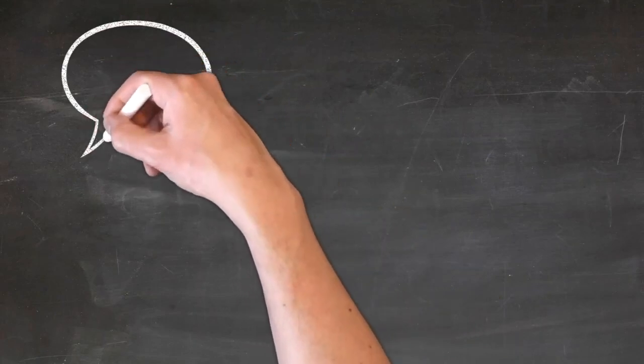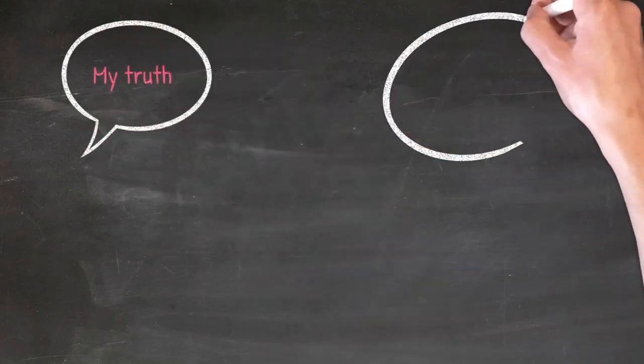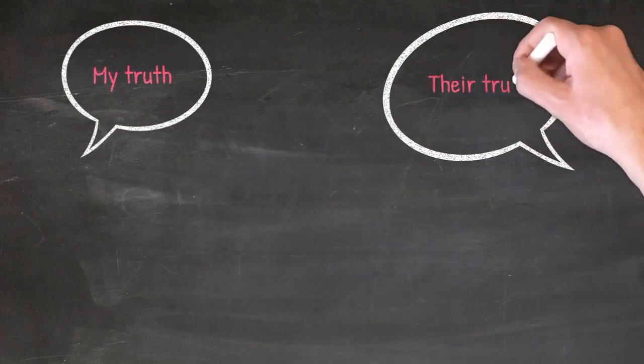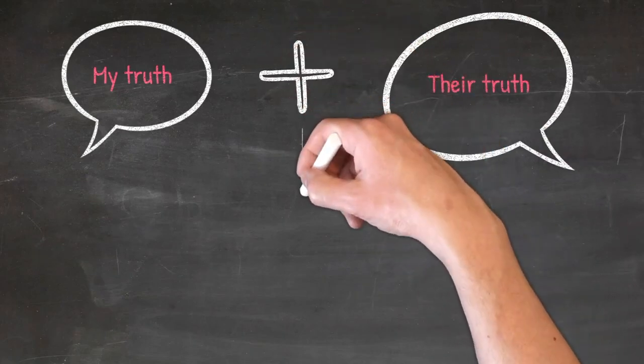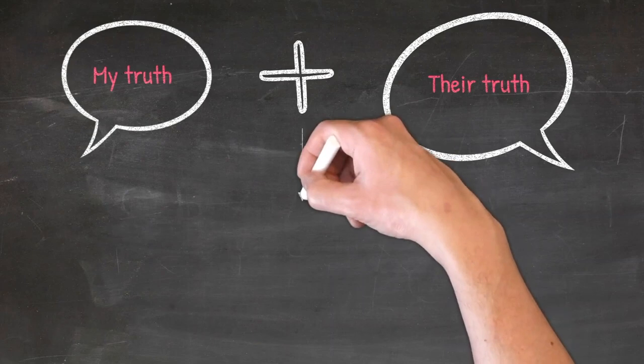The bitter pill to swallow is that the truth in all cases is a combination of multiple perspectives, and that if we want to work towards an objective truth, we must be willing to part with our position and consider the best of both sides.